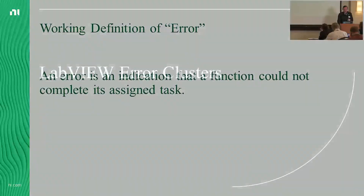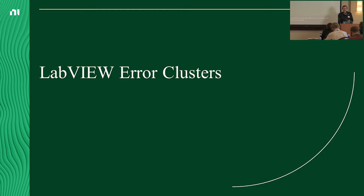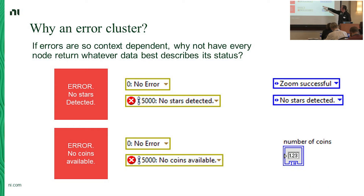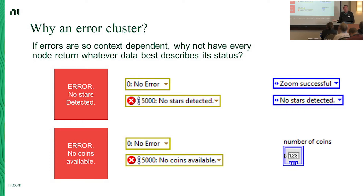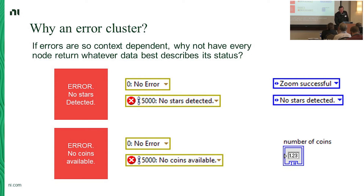Why is it an error cluster? We could use an error ring returning 'no error' or 'no stars detected,' or an enum 'zoom successful / no stars detected.' We could return number of coins as an output — if it's zero, obviously there are no coins. The fact that I couldn't give you coins is right there in the return results. Why do I need additional information in the error cluster to convey it?